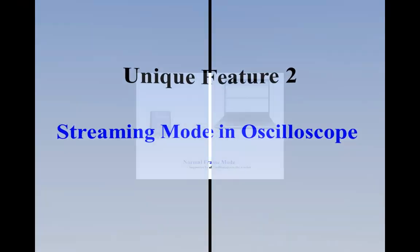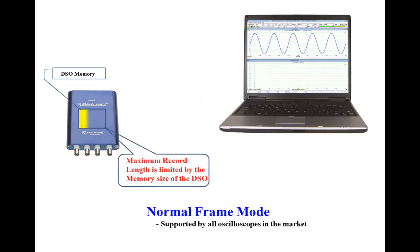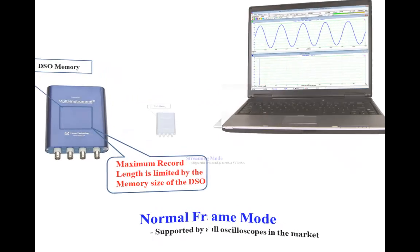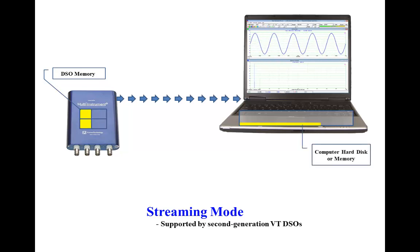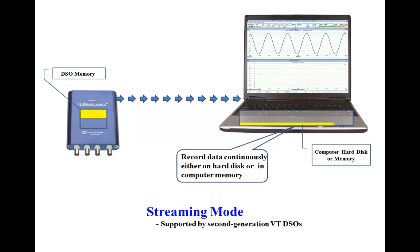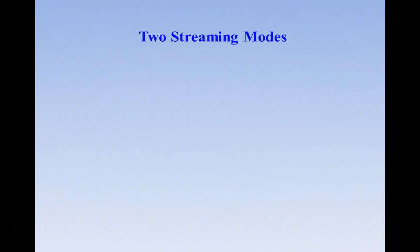Unique Feature 2: Streaming mode in oscilloscope. Normal frame mode is supported by all oscilloscopes in the market. Each frame of data will be triggered and then stored in the DSO memory first before it is transferred to the supervisory computer. The maximum record length is thus limited by the memory size. Beside the normal frame mode, the second-generation VT DSOs support streaming mode as well. This breaks through the record length limitation and greatly extends the maximum record length.